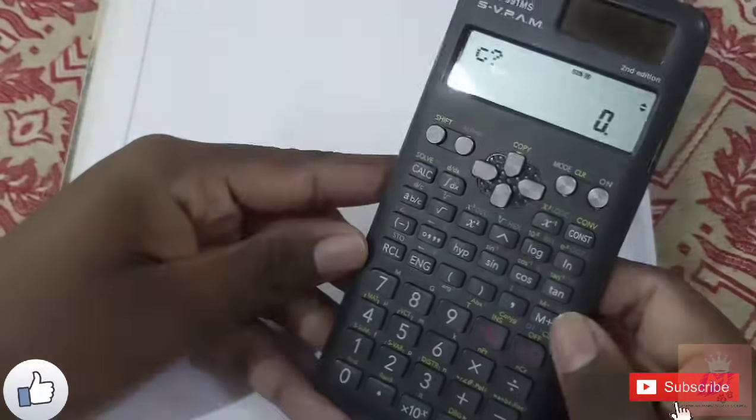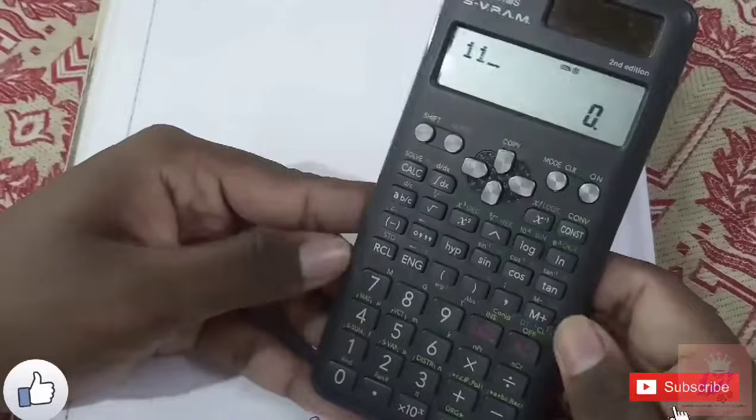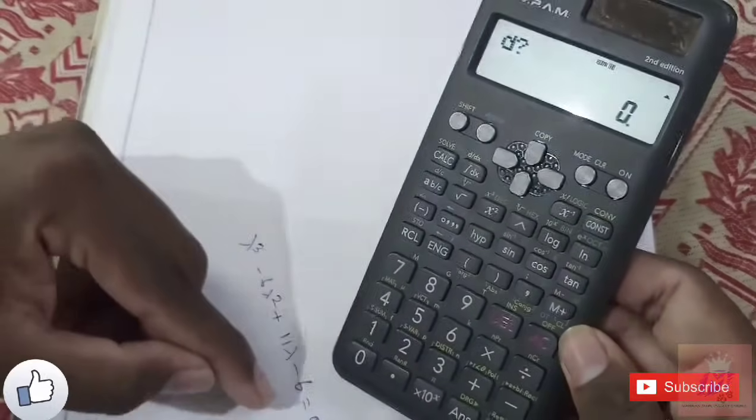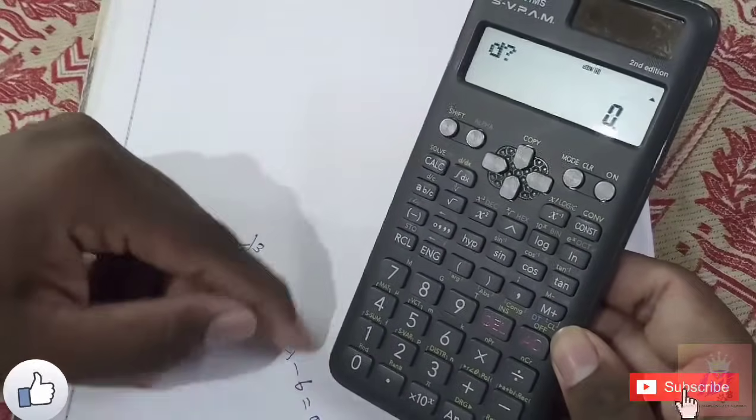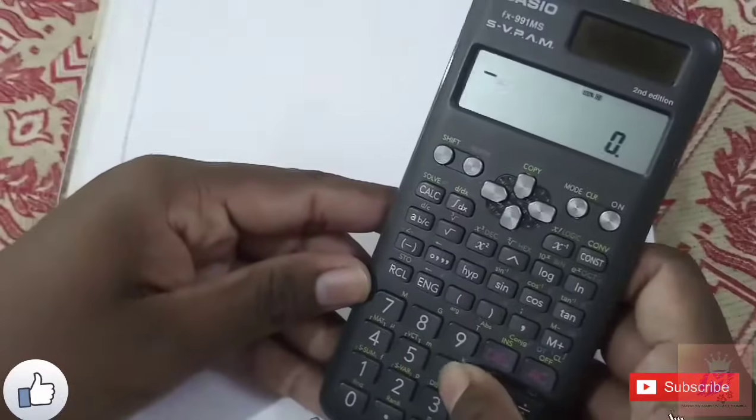Then c equals the coefficient of lambda, which is 11. And d equals the constant term, which is minus 6.